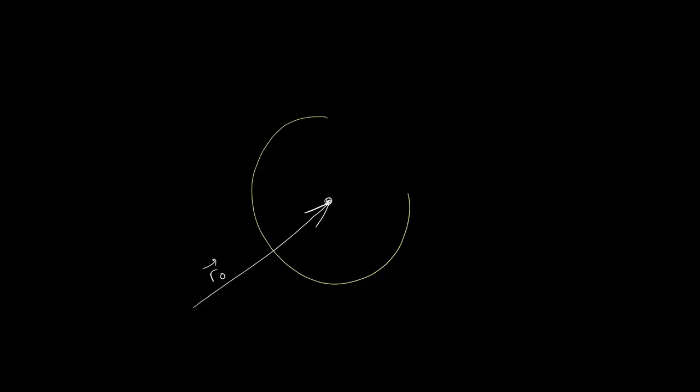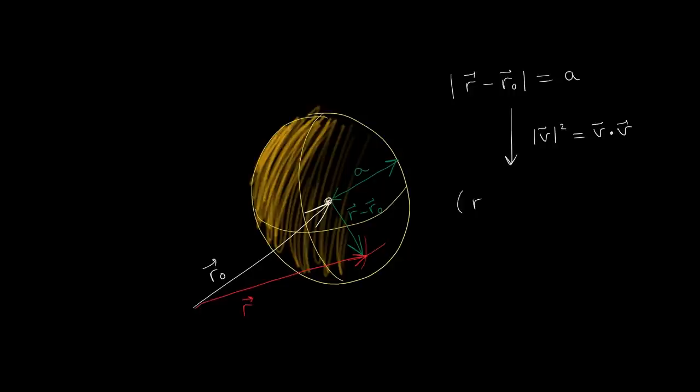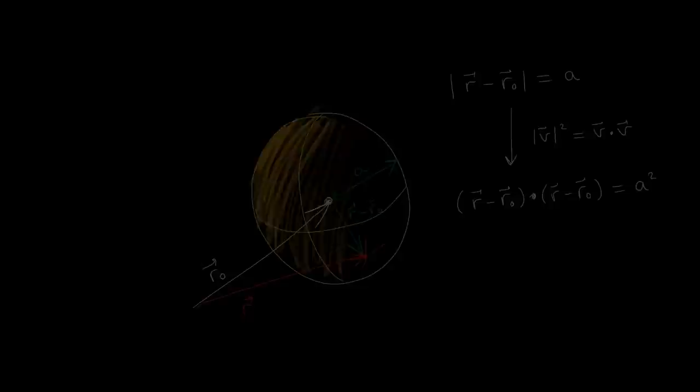We can also look at the equation of a sphere centered at point r0. By definition of a sphere, any point r on the surface will have a distance to r0 equal to a, where a is the radius. Therefore the length of r minus r0 equals a, and this constitutes an equation for the sphere. Since the length of a vector squared can be written as the dot product of the vector with itself, we can write the equation of a sphere in dot product form.